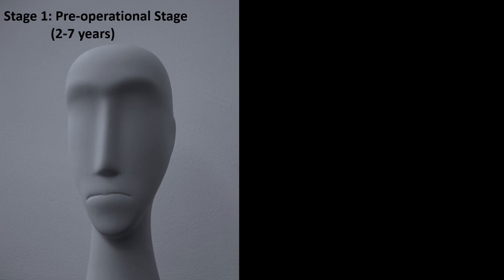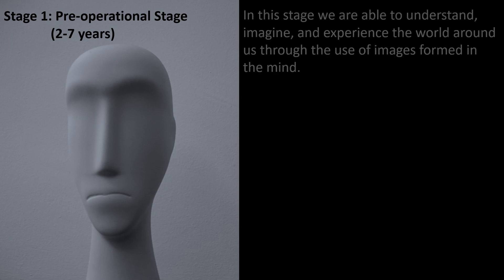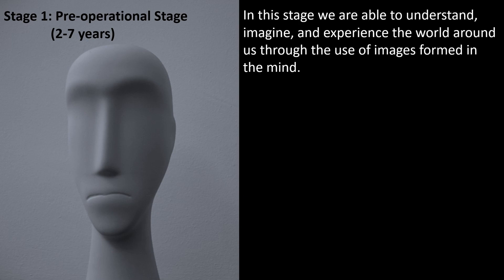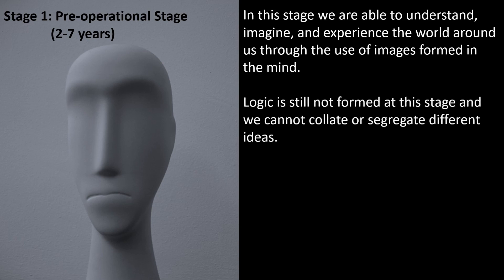The second stage of Piaget's theory of cognitive development is called the pre-operational stage. As per Piaget, this stage extends from two to seven years of our development. In this stage, we are able to understand, imagine, and experience the world around us through the use of images formed in the mind. Logic is still not formed at this stage and we cannot collate or segregate different ideas.